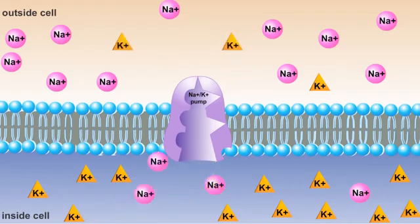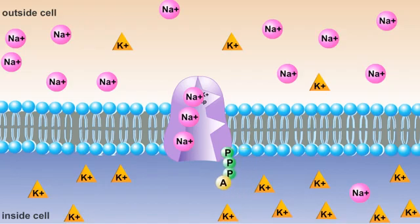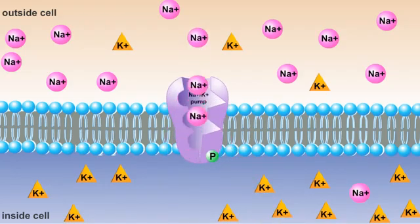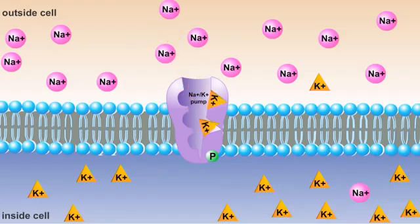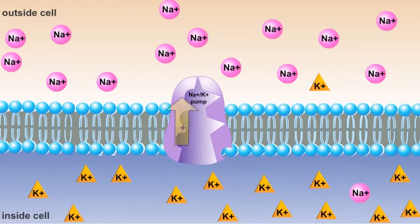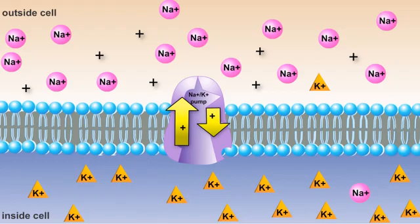Notice that for every three sodium ions leaving the cell, two potassium ions enter. Since both sodium and potassium ions have a positive charge, this unequal movement causes an electrical gradient to develop across the plasma membrane of the cell. A number of cellular processes, including the generation of nerve impulses, use this electrical gradient.